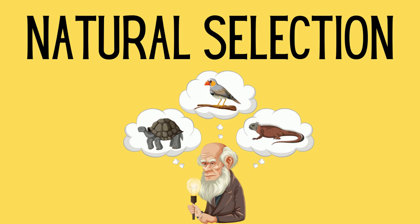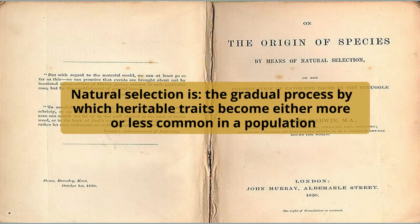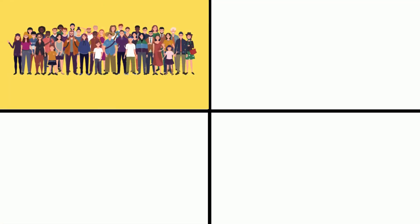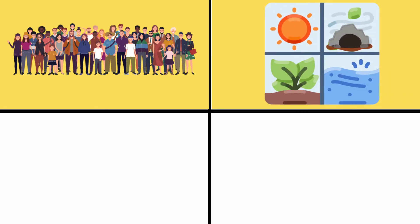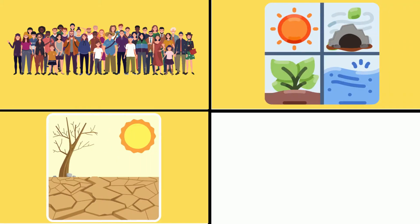Natural selection is the gradual process by which heritable traits become either more or less common in a population as a result of any or all of the following: overpopulation, competition for resources, changes in the environment, and predators.